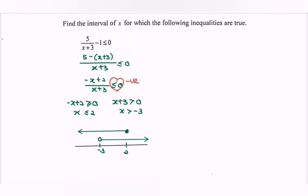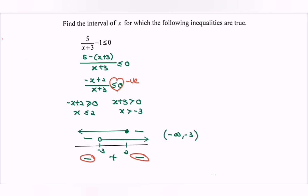Since we have the less than or equals to 0 sign, we illustrate the situation on the real number line to determine the sign. We have negative, positive, and negative. We prefer the negative, so the answer is negative infinity until negative 3, where negative 3 is not included, union 2 until infinity.